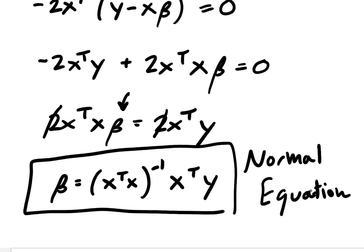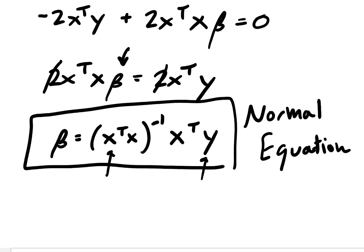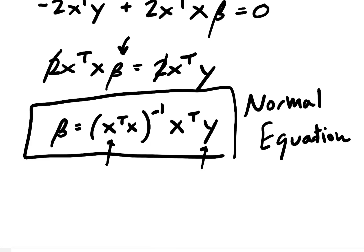This is a direct solution we can use to solve our optimization problem to get our beta vector. Since we know the values of X and y — where X is our features or independent variables, and y is our observed or dependent variable — we can solve this equation directly to get beta. I'll be showing you how to solve this equation in Python to get your beta terms for your regression problem. If you found this video helpful, please hit like or subscribe. Thanks for watching.